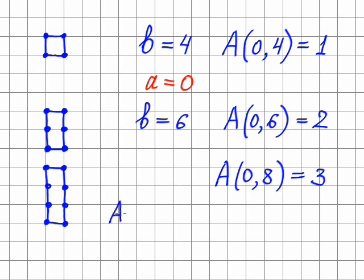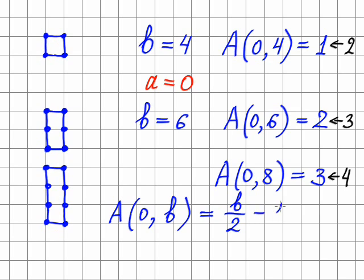So the dependence of the area on the number b is equal to: first of all we should divide b by 2. So if we divide b by 2 here we obtain 2, here we obtain 3, here we obtain 4. And to find the area, it's clear that we should subtract 1 from this number. So this equation would give the dependence of the area on the parameter b.